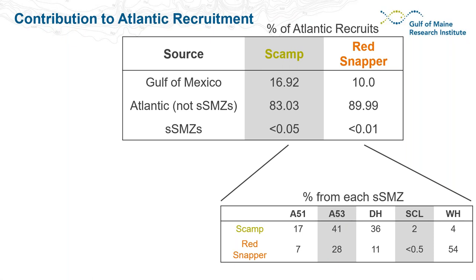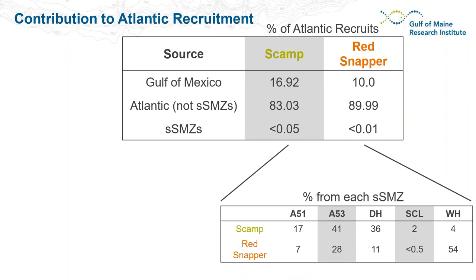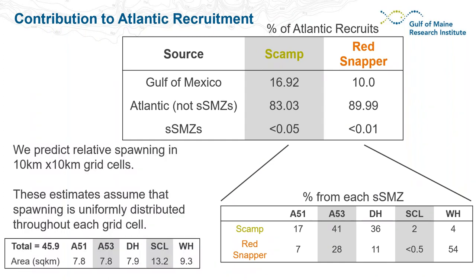For scamp, just over 83% of recruits come from the Atlantic outside the SSMZs and less than 0.05% come from the spawning SMZs. For red snapper, 10% of Atlantic recruits come from the Gulf of Mexico, 90% come from other Atlantic locations outside the SSMZs, and less than 0.01% come from the SSMZs. Among SSMZs, for scamp most recruitment comes from Area 53 and Devil's Hole; for red snapper most comes from Warsaw Hole followed by Area 53.